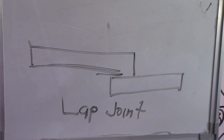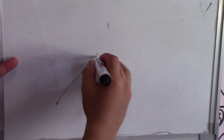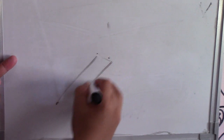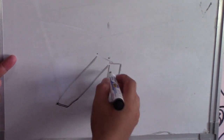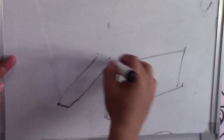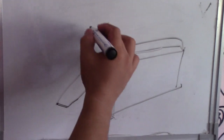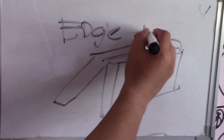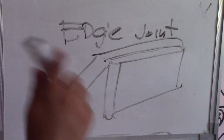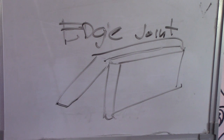Number five, last, is edge joint. Here is the edge joint — the weld is applied here at the edge. The applicable welds for edge joint are: bevel groove, flare V groove, flare bevel groove, flare V groove, J groove, square groove, U groove, V groove, edge weld, and seam. Those are the applicable welds and weld symbols for the edge joint.